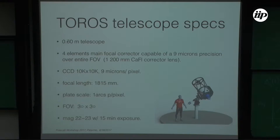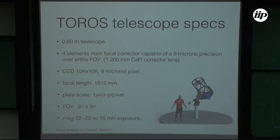We called it TOROS — Transient Optical Robotic Observatory of the South. The costs are of the order of a million dollars. The most important features are a field of view of nine square degrees. Remember that the localization area of LIGO-Virgo candidates is of the order of hundreds of square degrees, so a telescope like this can sweep the probability area in one night with a chance of finding something without any particular targeting.